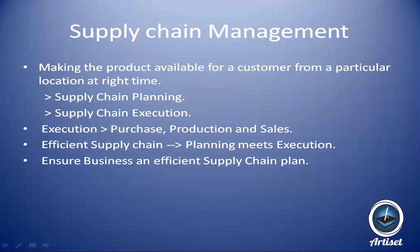Supply chain planning means: for the next month, a particular customer — say a supermarket in New Delhi — needs around 500 bottles of cola, so we reserve those for them. Whether the customer actually buys that is a different question — this is just a demand prediction. Supply chain execution, the execution part, consists of purchase, production, and sales.